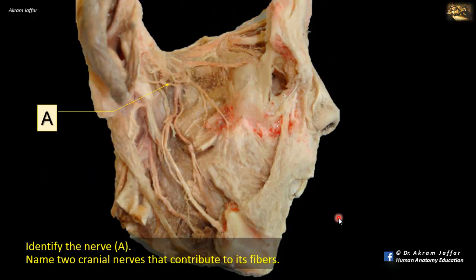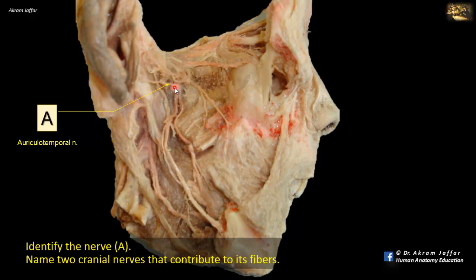Identify nerve A and name two cranial nerves that contribute to its fibers. This is a dissection of the infratemporal fossa with the ramus of the mandible removed. In the infratemporal fossa, the nerve is the mandibular division of the trigeminal nerve and its branches, including the buccal, lingual, and inferior alveolar nerves. The nerve going backwards to the auricle and temple is the auriculotemporal nerve, which carries sensory fibers distributed to the skin of the temple, the auricle, and the temporomandibular joint. These fibers originate in the trigeminal ganglion — so the trigeminal nerve is the first cranial nerve contributing to the auriculotemporal nerve. In the infratemporal fossa, medial to the mandibular nerve, there is a tiny ganglion called the otic ganglion.